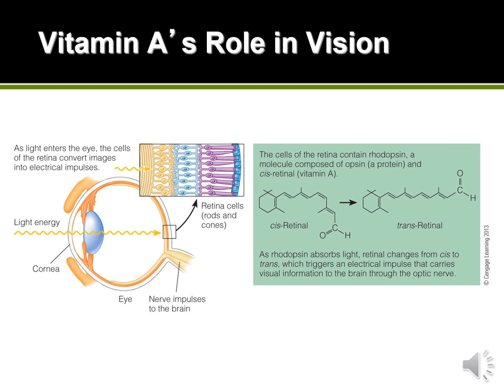When this change happens to the protein and vitamin A structure, it triggers an electrical impulse which sends the image to your brain and you're able to see. This happens every single time you look at something. Once the vitamin A changes structure and stimulates that electrical impulse it actually drops off — it breaks off the protein and is released, and we need to replenish the vitamin A. So we constantly need a supply of vitamin A so that every time we view an image and vitamin A breaks off, we can attach another one to see the next image.